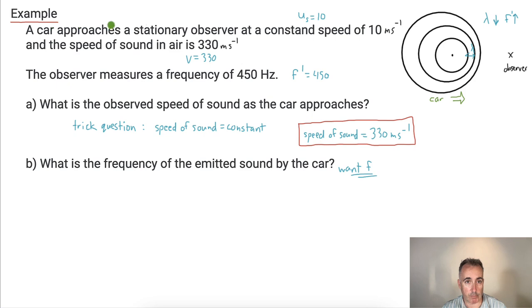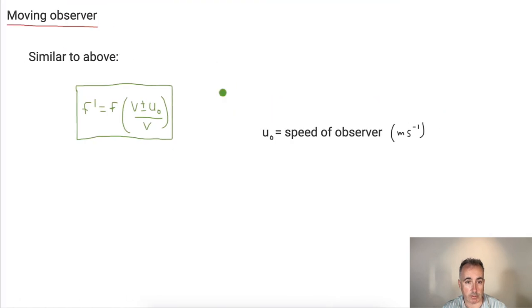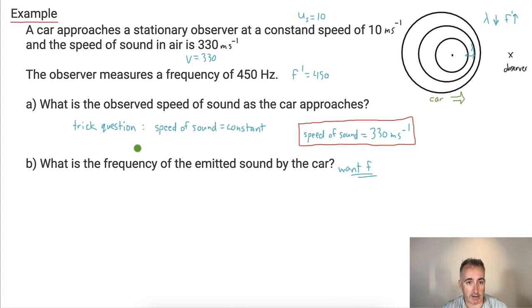So let's use our equation first of all. It's going to help us govern this behavior. Now, moving a source means that we have this equation right here. It goes F prime equals F times V over V plus or minus U_S. So let's write that down. So we have F prime, it's always good to write down what you're doing. It goes F times V over V plus or minus U_S. Now we've got to think about this one carefully. This is the key part here.